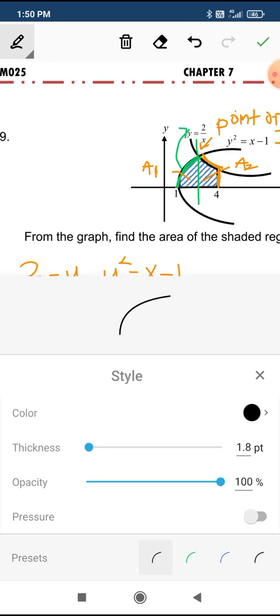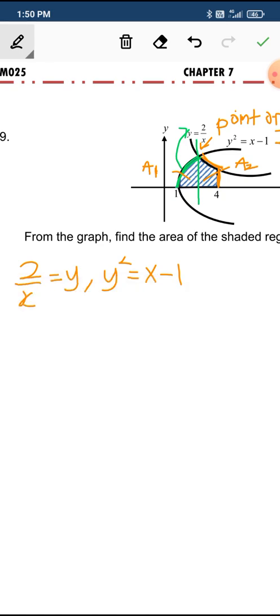We change the font color. When you put this inside here we're supposed to solve this and then we get 4 over x squared equals x minus 1 and you cross multiply.